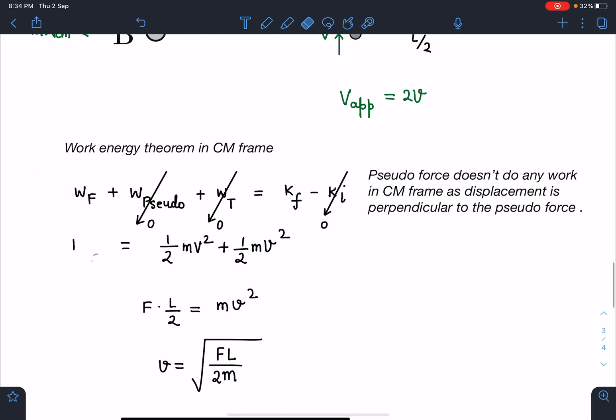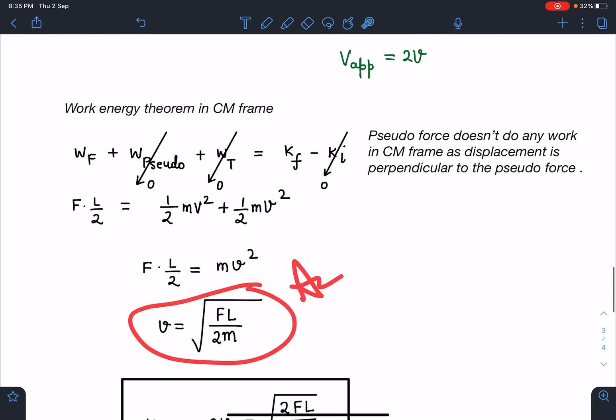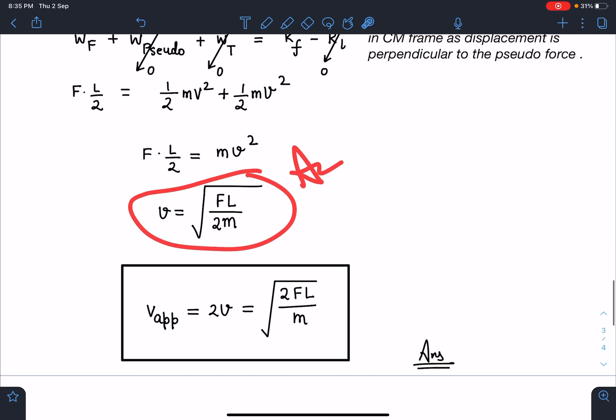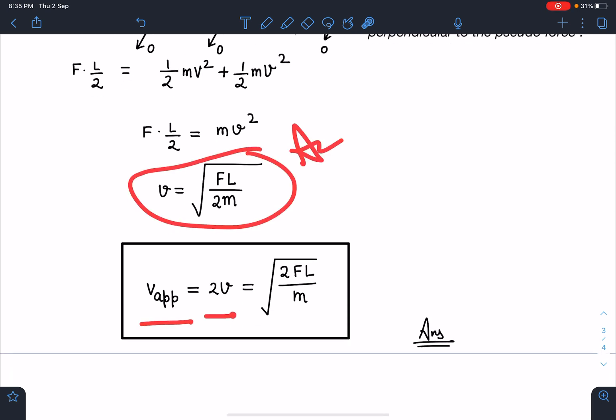So F into L by 2. And this is zero, this is zero. K_final is half m v squared plus half m v squared. And further we can simplify that. We get v equals root of FL by 2m. And v_approach will become double of this, so 2v.